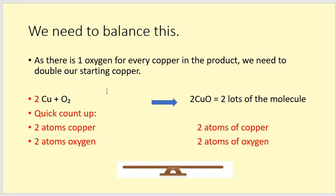Now, we know that in the product, there has to be one oxygen for every copper. So that means we're going to need to double our starting copper because we've already got two lots of oxygen. So we're going to have 2 Cu. That will give us two atoms of copper. We've already got two atoms of oxygen. So then we're going to need to put a 2 at the front of the compound, the copper oxide, to double the whole thing, double the molecule. Then we'd have two atoms of copper, two atoms of oxygen. Now we've got four atoms and four atoms and we are balanced. Happy days, we have done it. Not so tricky, was it?